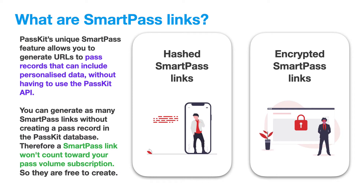What we're going to be taking you through is PassKit's unique SmartPass feature. This allows you to generate URLs — web links to pass records that can include personalized data without having to use the PassKit API. You can generate as many SmartPass links as you want without creating a pass record in the PassKit database. When you create a SmartPass link, it doesn't count towards your pass volume subscription until one of the customers clicks on it. So they're actually free to create.